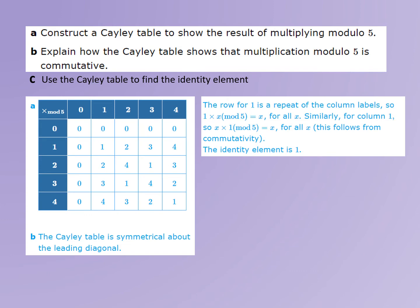The Cayley table for multiplication mod 5 is given. We can show that multiplication mod 5 is commutative because the Cayley table has a line of symmetry along the leading diagonal. To identify the identity element, we are looking for an element that leaves all other elements unchanged. Looking down the column for 1 or across the row for 1, we can see that the other element remains unchanged when 1 is used.